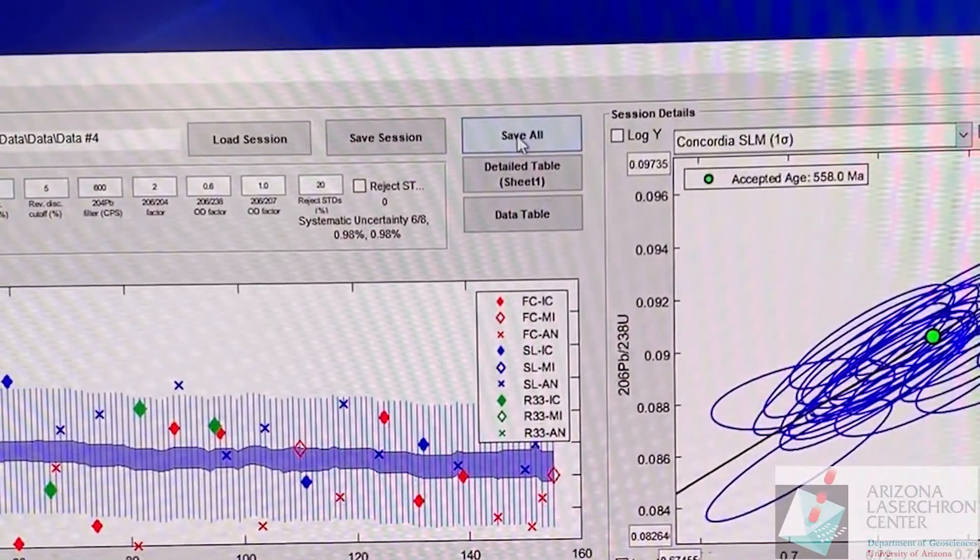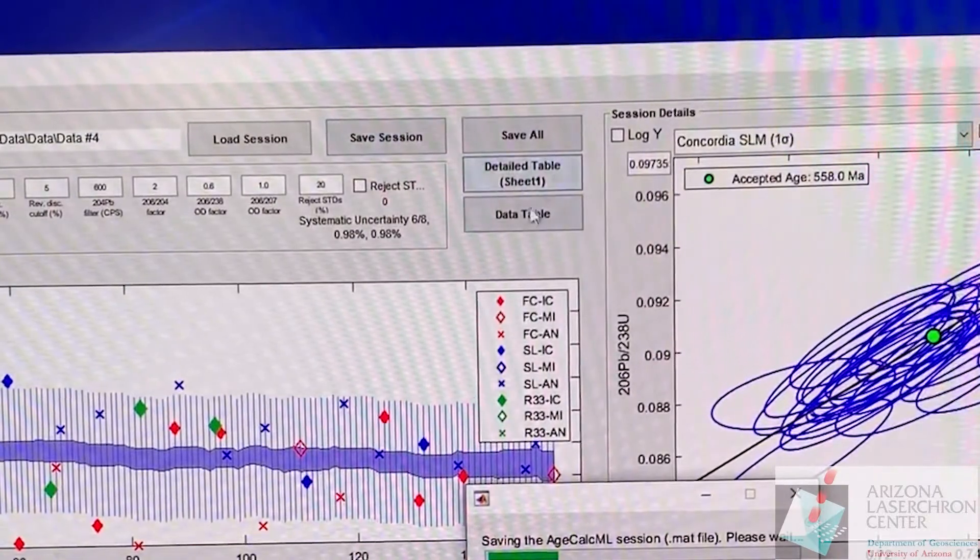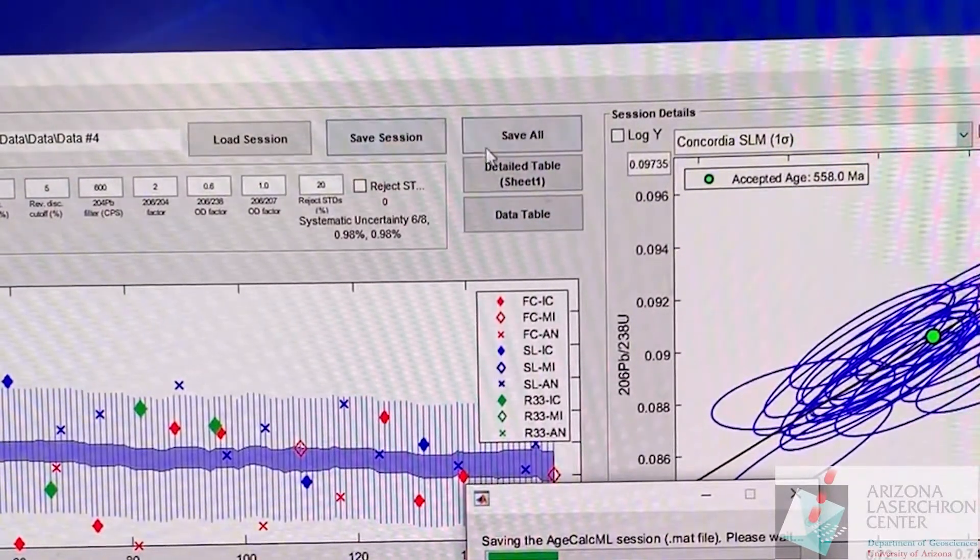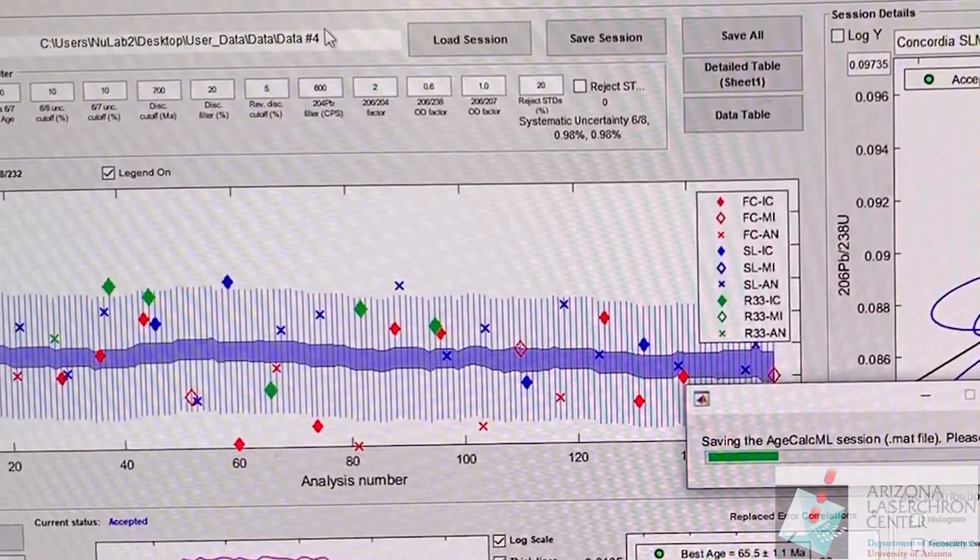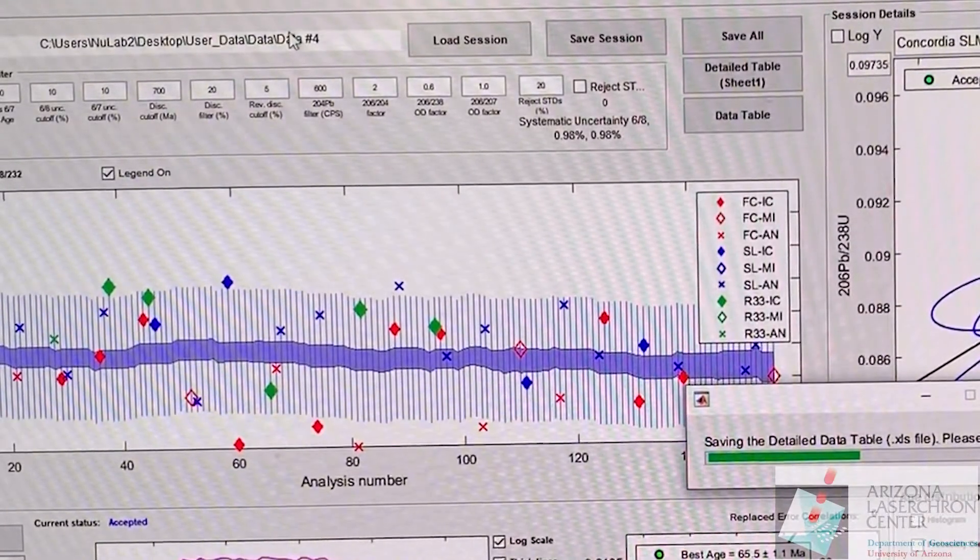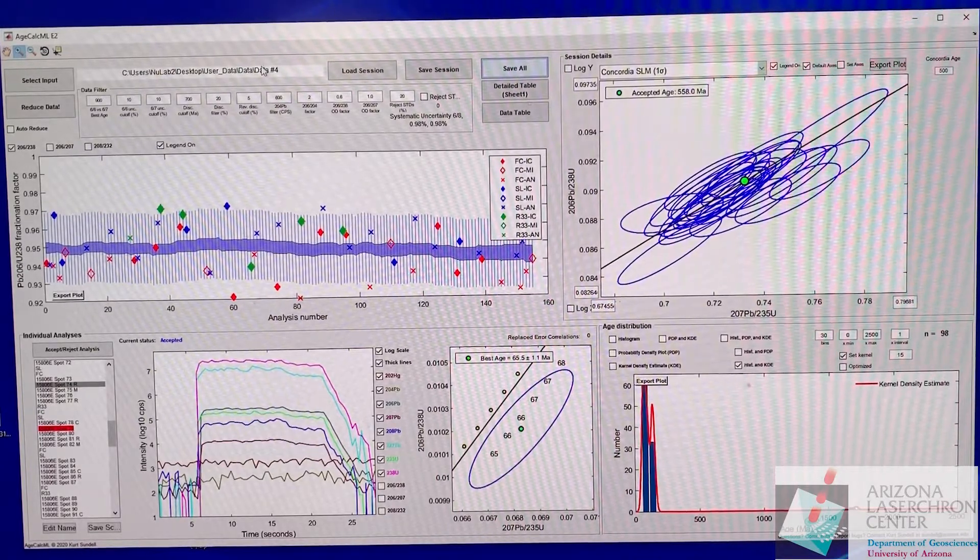This is similar to the zircon table from the original AgeCalc. But what we're going to do is just click on save all and what this is going to do is automatically save each of these three, the session, the detailed table and the data table with the same names and put them in the same directory that we're working in. This way you don't have to type in any names or anything like that. It's finished.